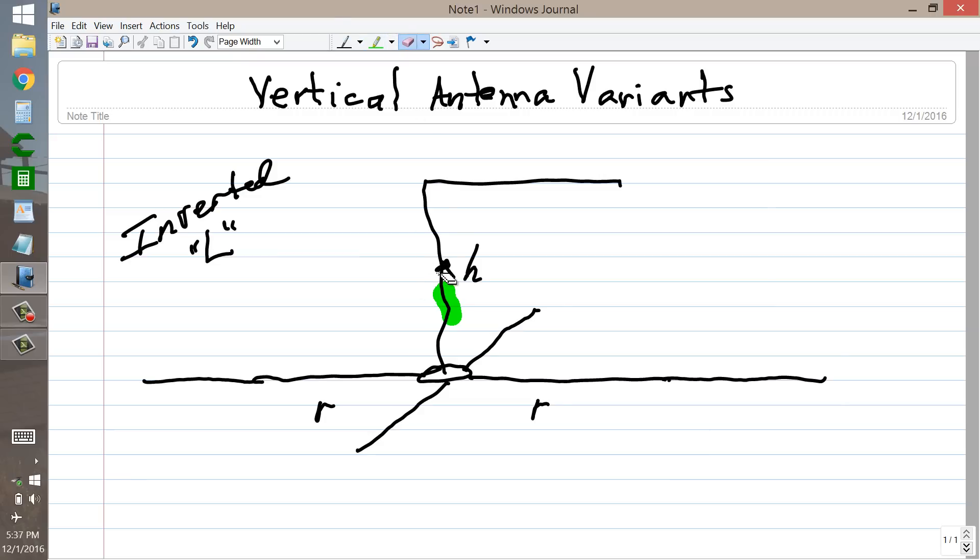Now you can also get rid of the L configuration and use a T configuration instead, something like that. Here's your height. It's in effect the total length, the total height plus one of the sides, and then a little bit less because when you make a T instead of an L, this distance right here, this L part of the T, isn't going to be exactly a quarter of a wavelength, it's going to be a little bit shorter than that for resonance with quarter wavelength radials.